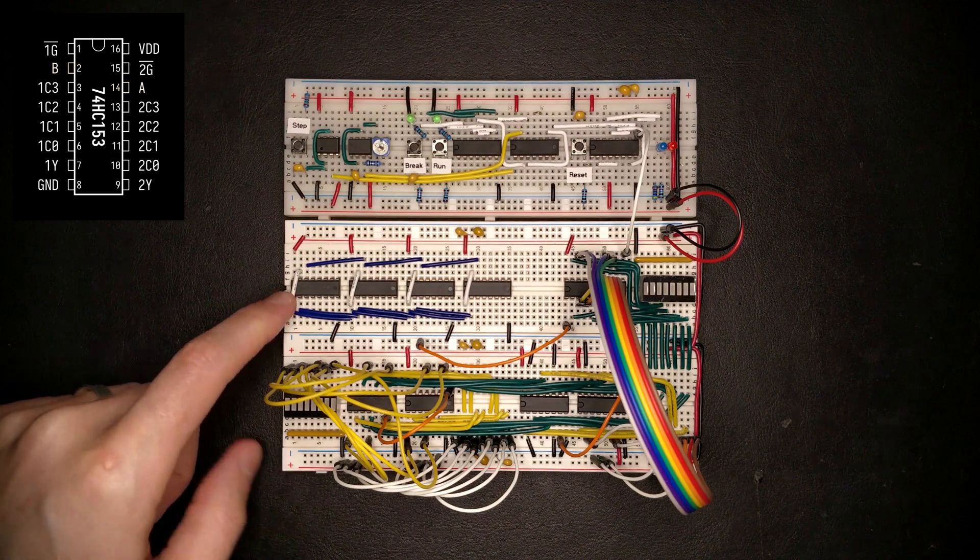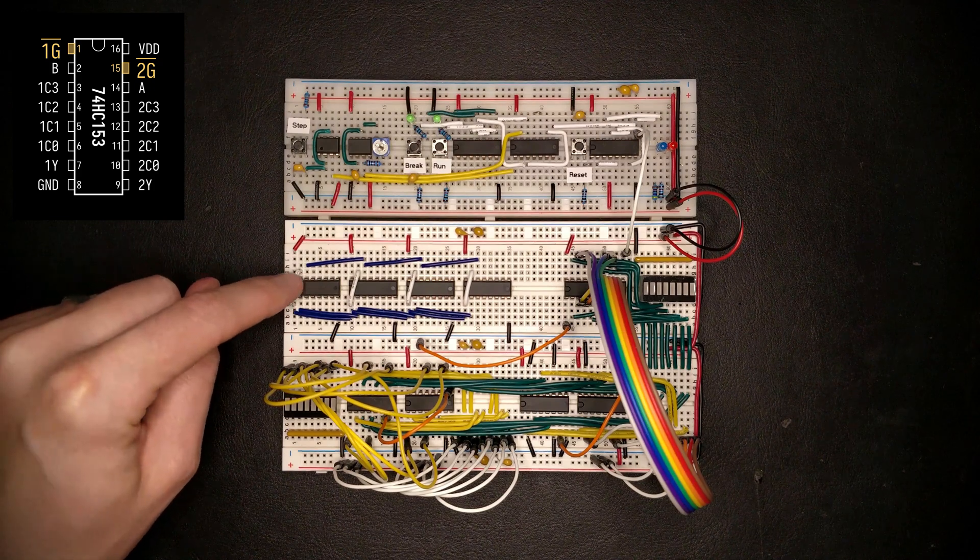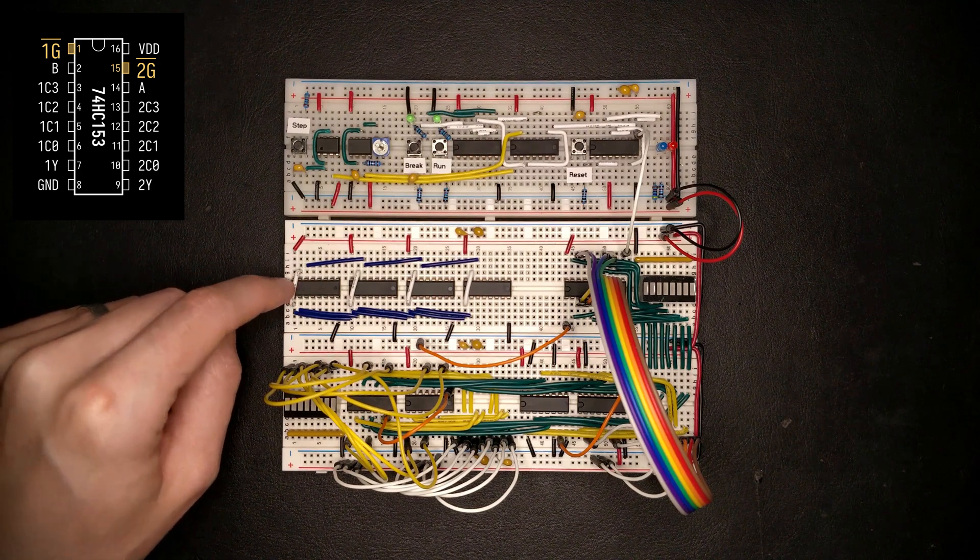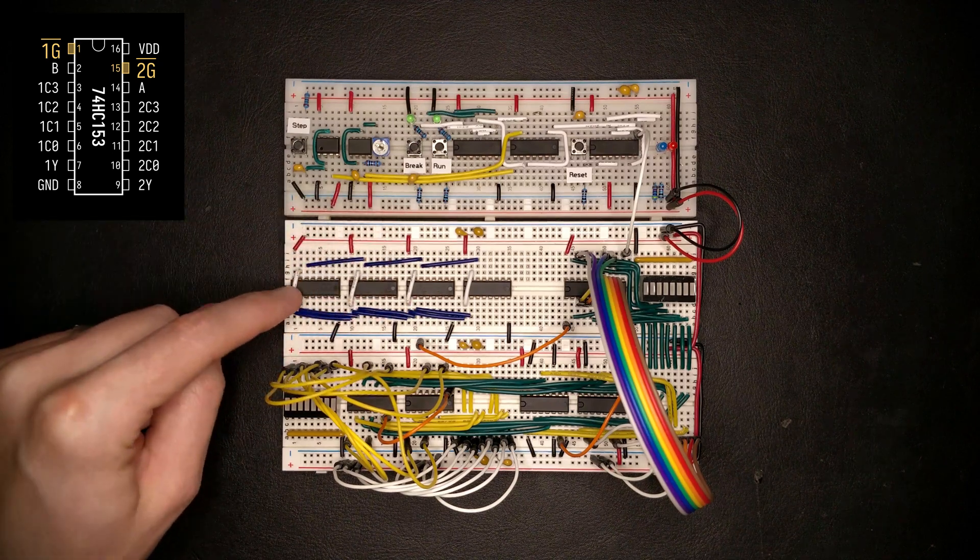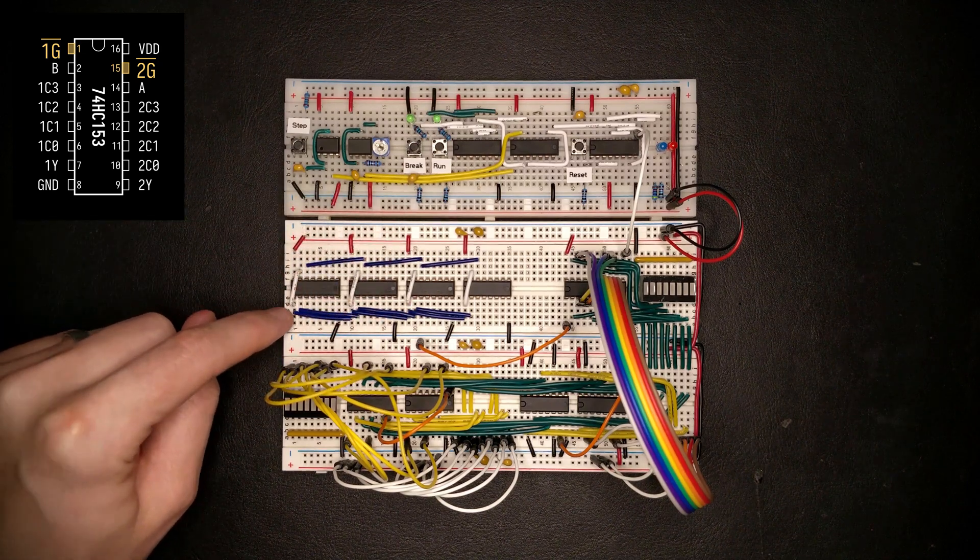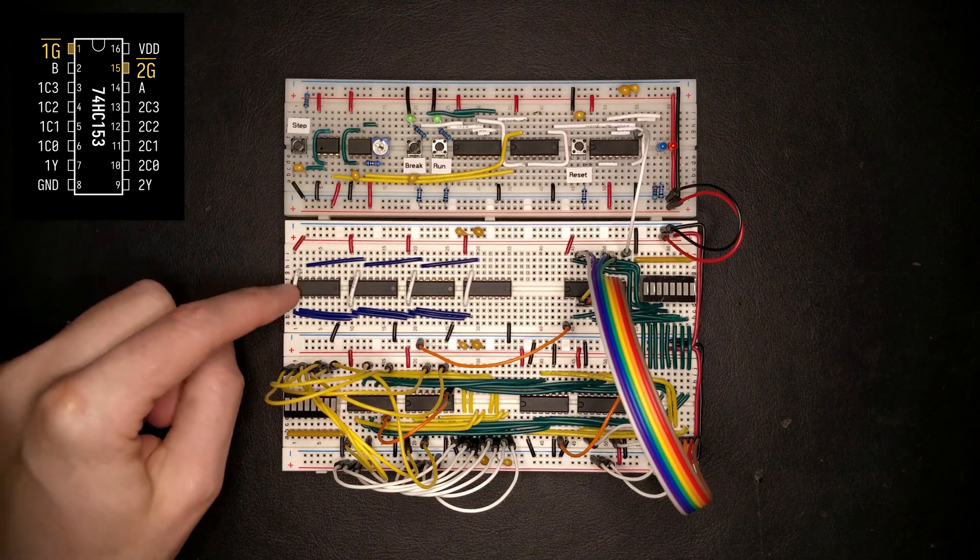For the time being, let me actually pull low this enable signal of the entire multiplexer. This is an active low signal on the MUX, so if we pull that low, these are just going to operate as regular MUXs. And if we were to pull that signal high, all the MUXs would just output a constant zero.